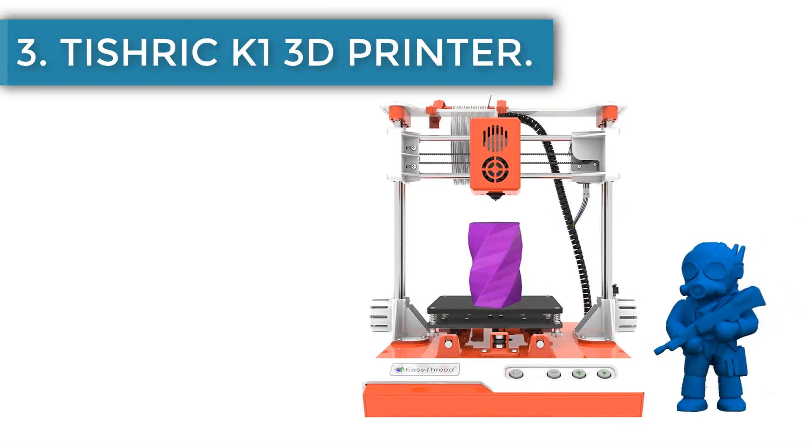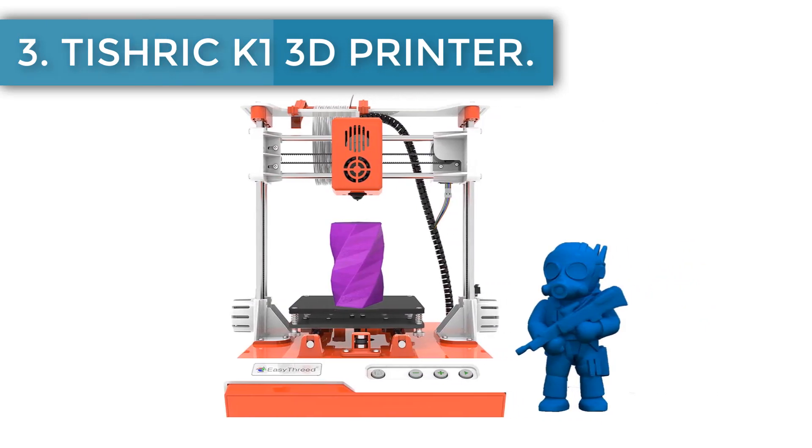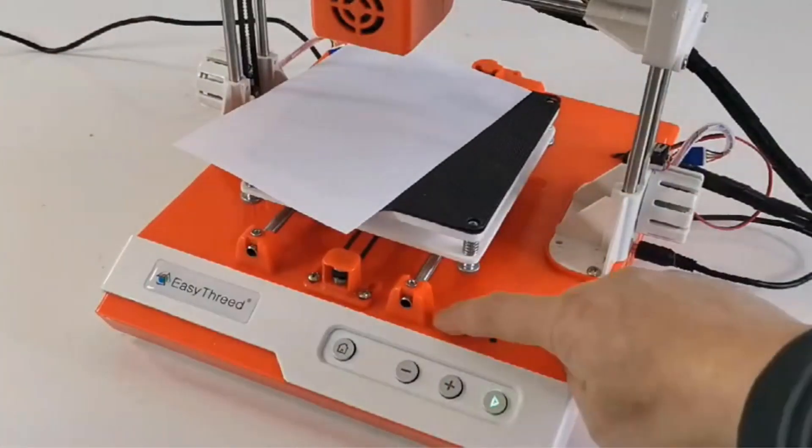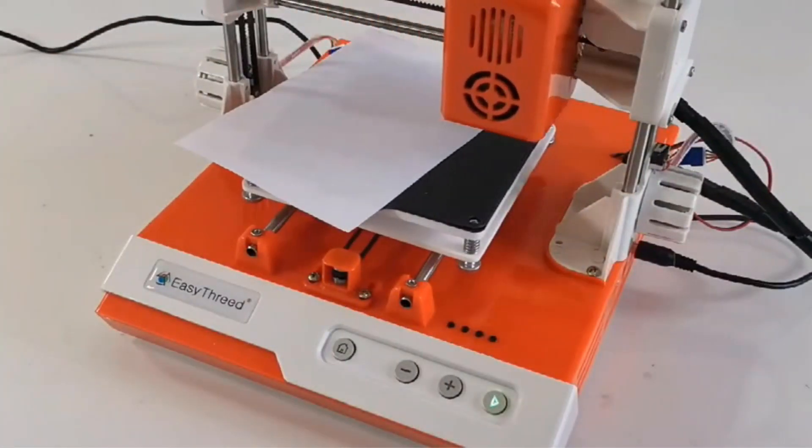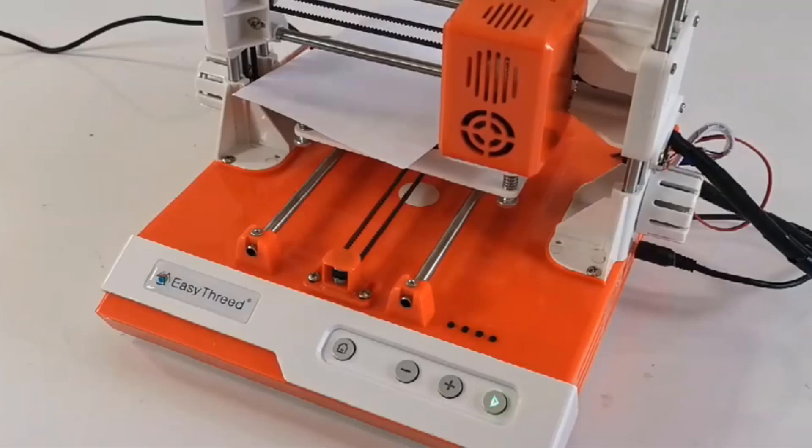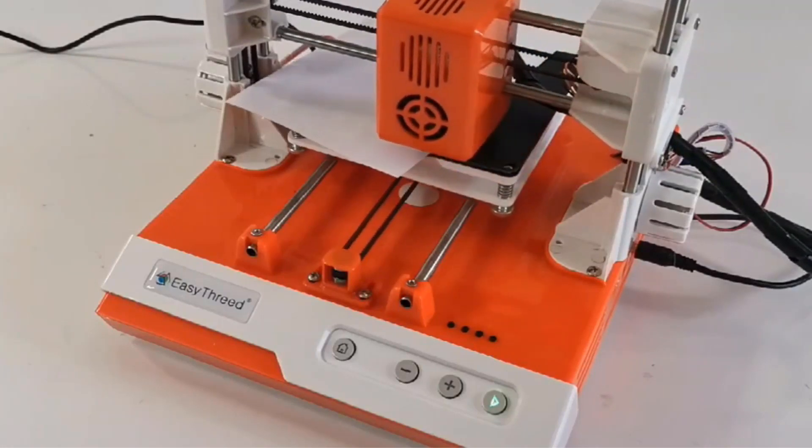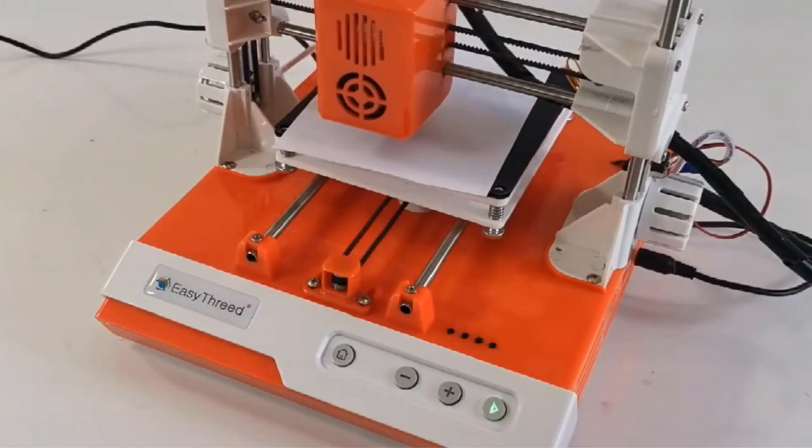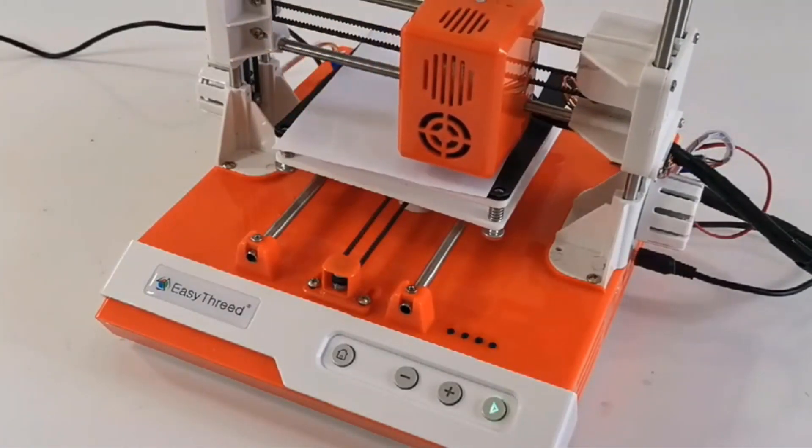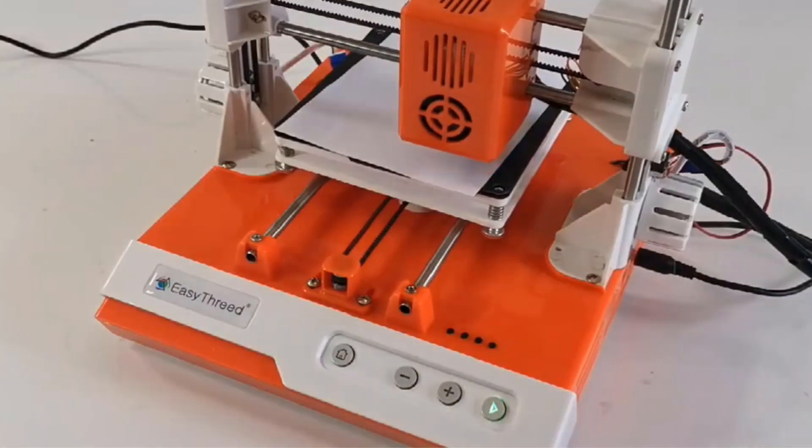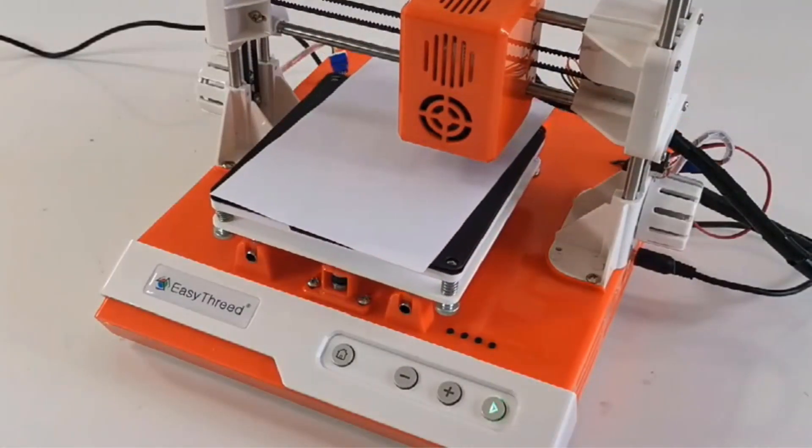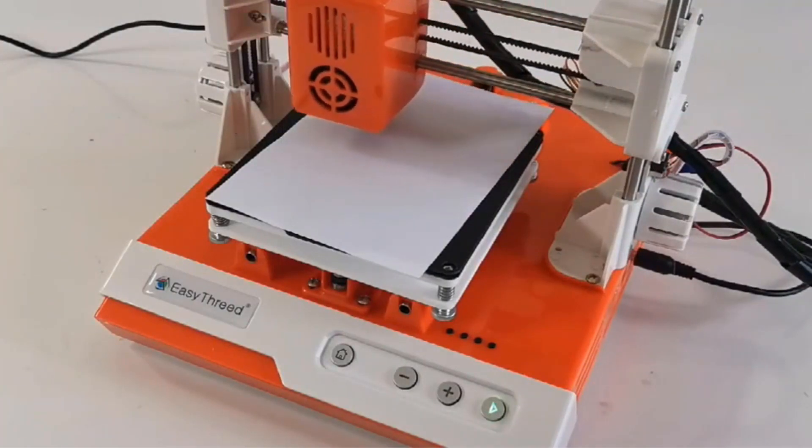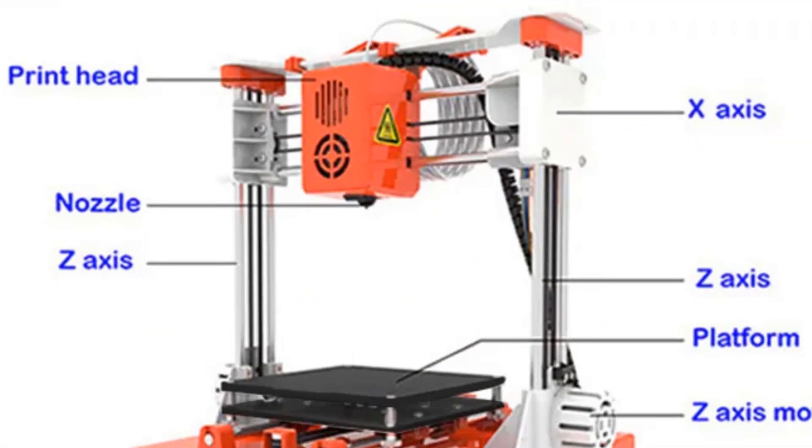Number three, Tishrik K1 3D printer. If you want to introduce your kids to 3D printing then the K1 model is a great and affordable beginner-friendly option for learning. It will cost you around $90, leaving you with enough money to buy a spool of plastic filament for your first printing session. The extrusion temperature is limited to 180 to 230 degrees Celsius, so it is recommended to use PLA material with a melting point of 180 degrees for a smooth printing process.